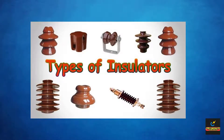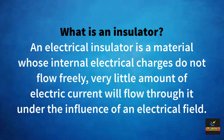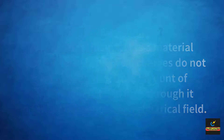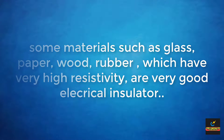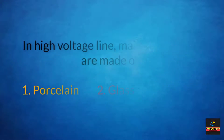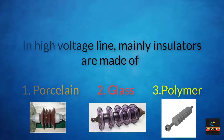Today we are talking about types of insulators used in transmission and distribution lines. An electric insulator is a material whose internal electric charges do not flow freely; very little electric current will flow through it under the influence of an electric field. Some materials such as glass, paper, wood, and rubber, which have very high resistivity, are very good electric insulators. In high voltage lines, insulators are mainly made of porcelain, glass, and polymer.